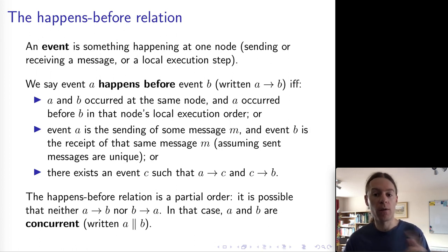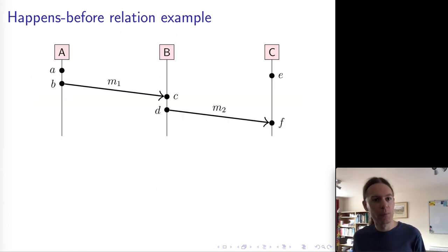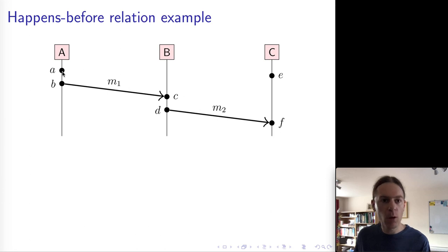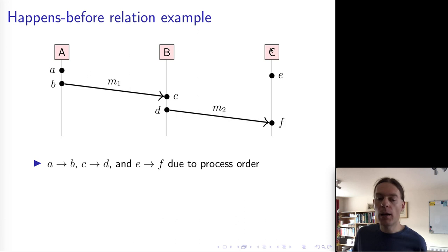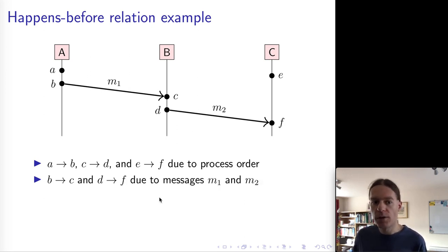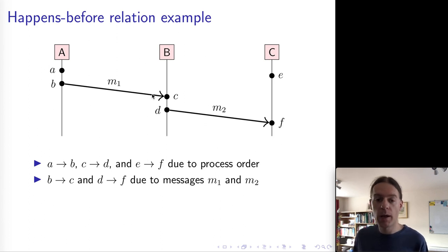Let's look at an example of the happens-before relationship. Events are represented as little black blobs and messages are sent over the network with arrows. We have three nodes, and we build up the happens-before relationship from the individual clauses. Due to local execution order: node A executed event A before B, so A happened before B; node B executed C before D, so C happened before D; node C executed E before F, so E happened before F. Due to messages sent and received: B happens before C because that is message M1 traveling over the network, and D happens before F because that is message M2 traveling over the network.